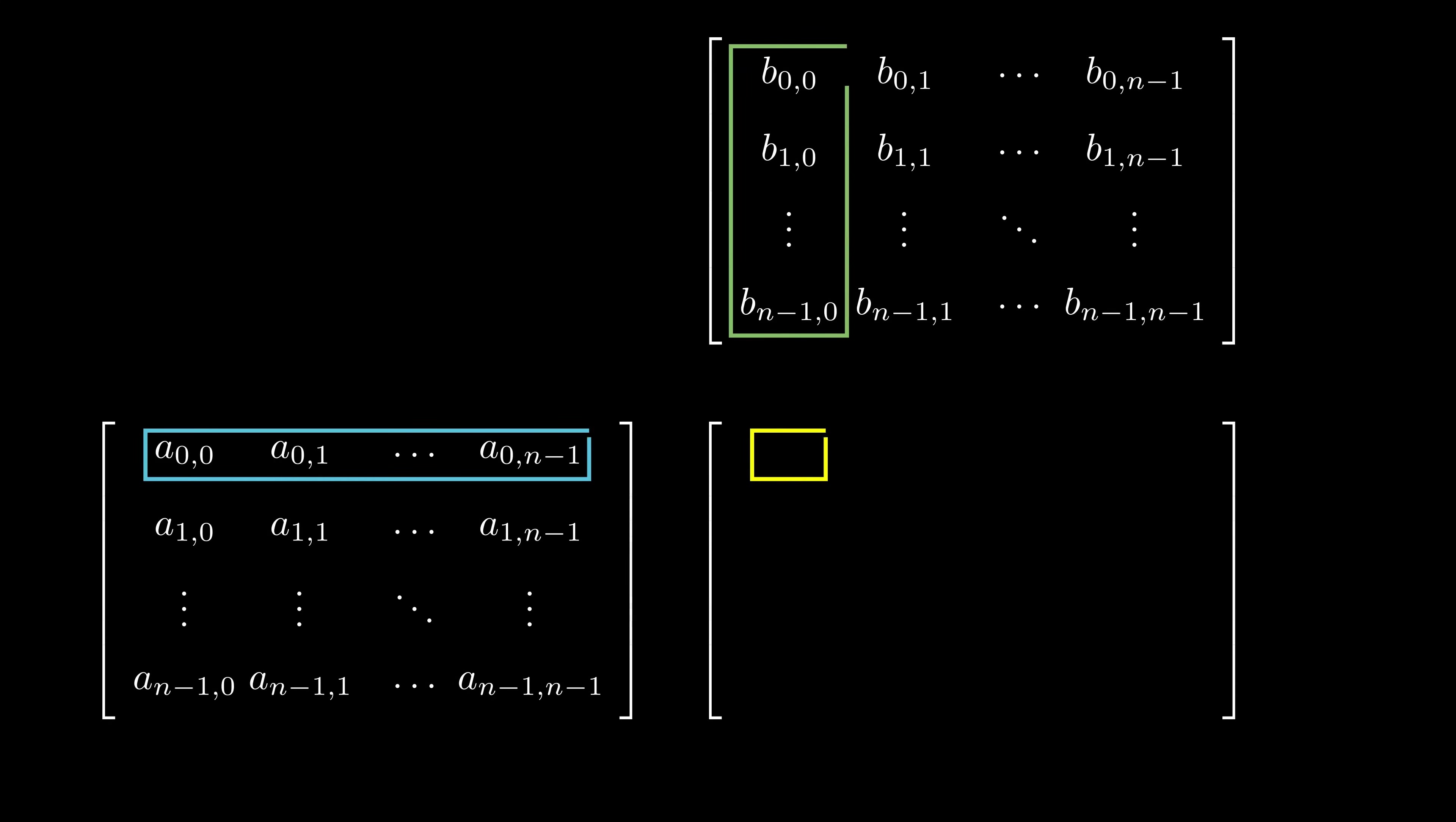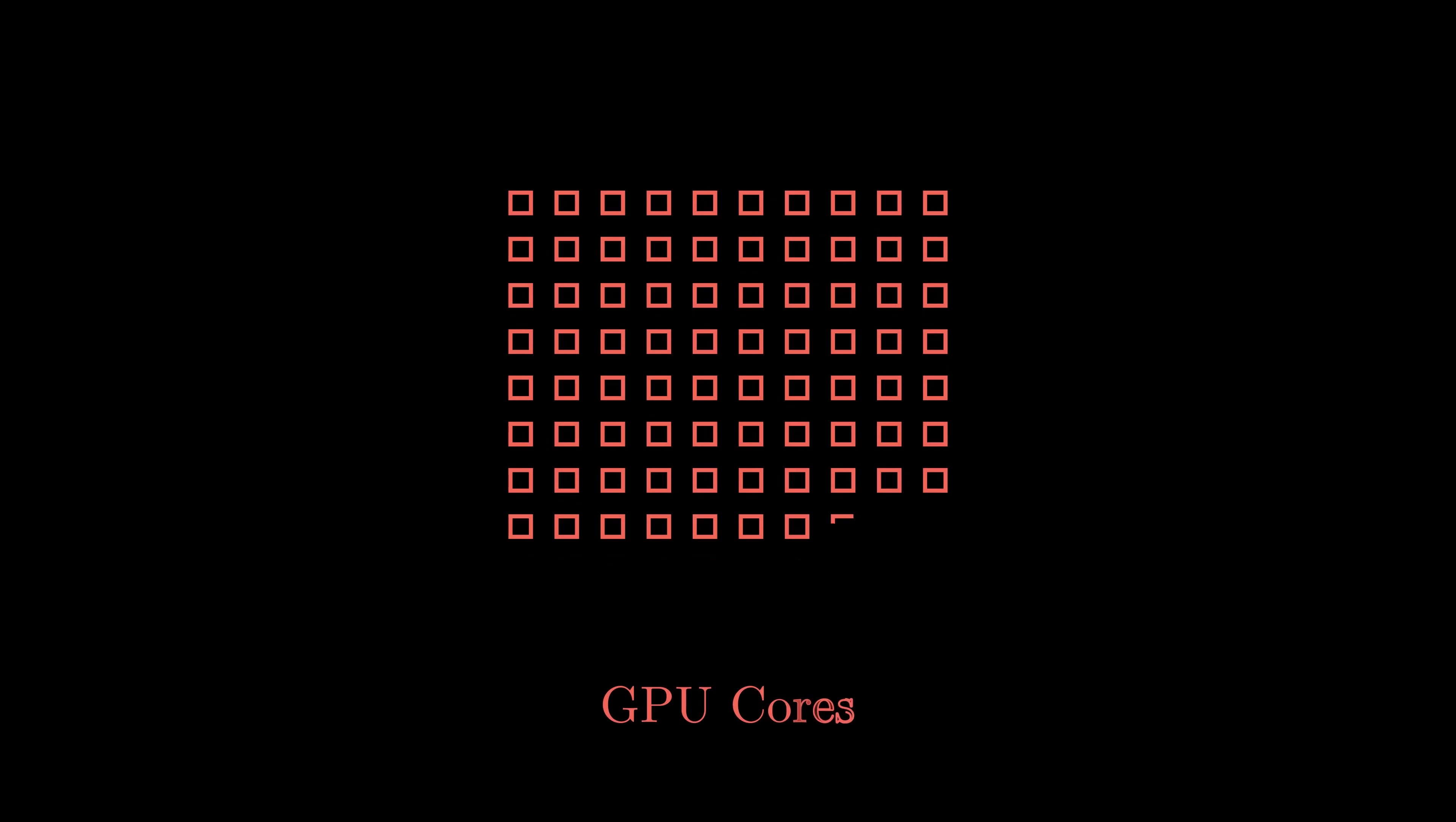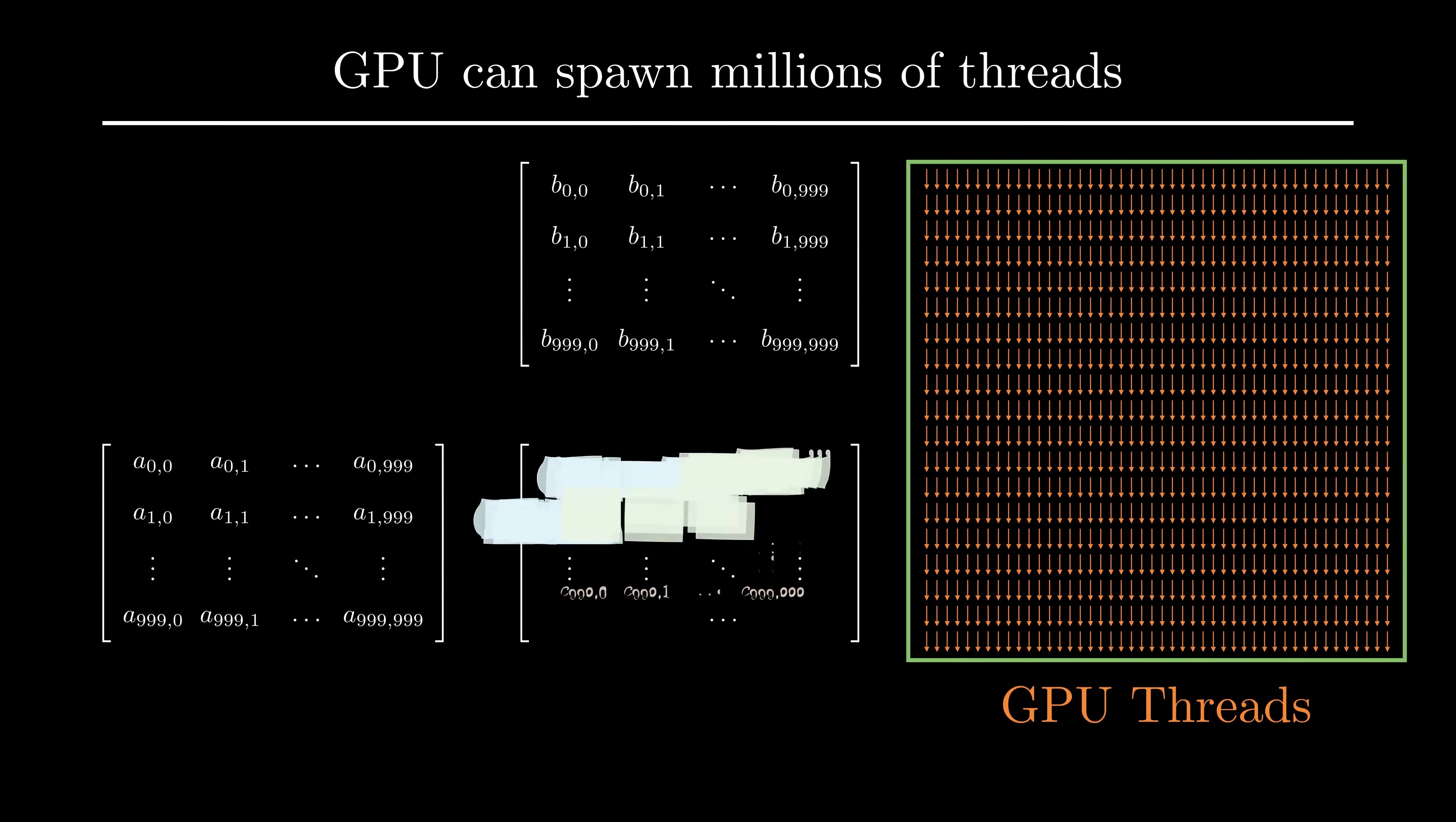Each output matrix element is computed using a combination of a row and a column of input matrices. The thing to note here is that the calculations involving an output element are independent. A GPU with thousands of cores can spawn millions of threads. From a programmer's point of view, these threads work independently in parallel. Parallelizing matrix multiplication is relatively simple. Each thread is assigned a job to compute an output matrix element.